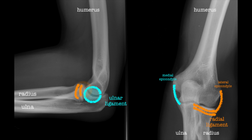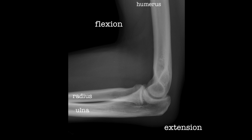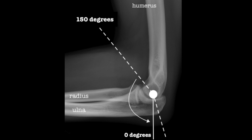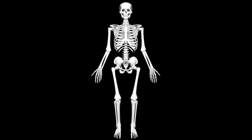Another important structure in the elbow is the bursa, which will not be covered in this video. The elbow joint is marked by the medial and lateral epicondyles as well as the olecranon. The normal range of motion of the elbow in extension and flexion is 0 to 150 degrees. When the elbow is extended, the forearm normally lies in slight valgus, and the average pediatric carrying angle is 15 degrees.